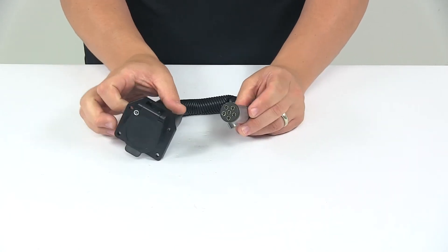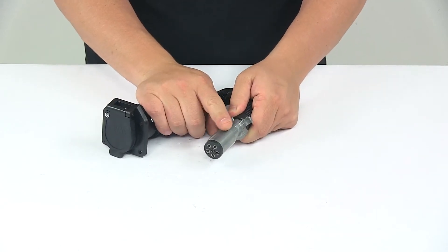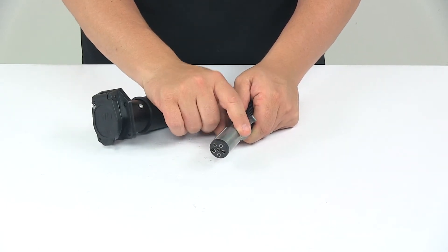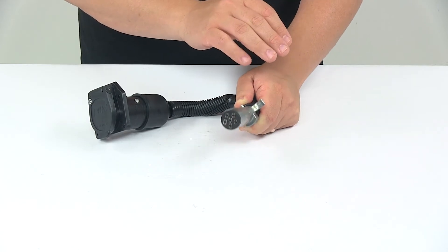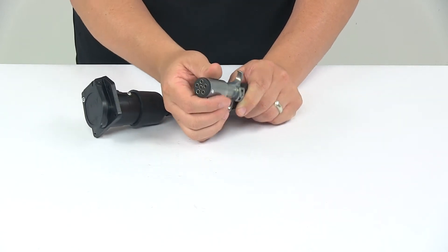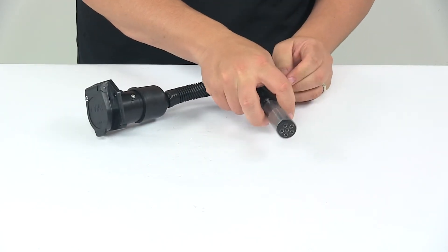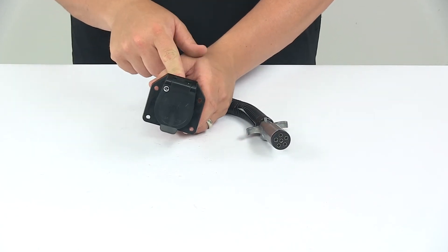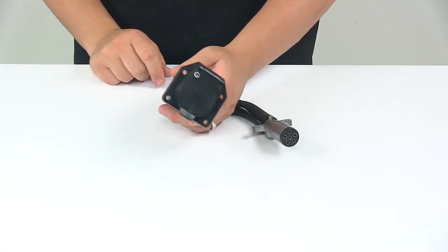It's constructed of durable die-cast zinc on the six-way connector, which has a corrosion-resistant design. We have finger tabs for an easy grip design, and on this side we have the impact-resistant seven-way connector.